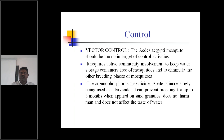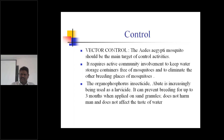Vector control activities must be taken up: storage water should not be kept more than seven days, so replace the water every seven days. The breeding sites of mosquitoes must be destroyed. The organophosphorus compound Abate is very effective, prevents mosquito breeding for more than three months, and is not harmful to the human population.